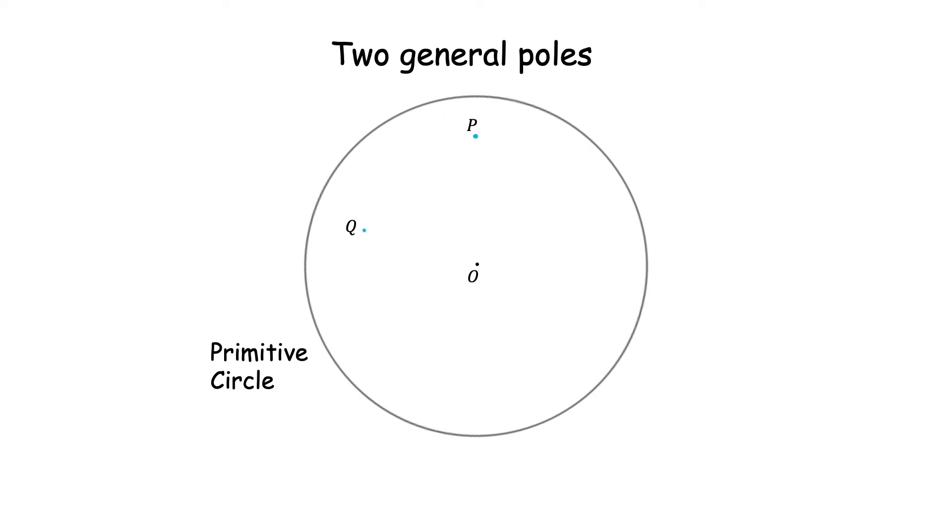If a direction lies in a plane, the opposite direction lies also on the same plane. So if a pole lies on a great circle, the opposite of the pole will also lie on the same great circle. So if we find opposite of either P or Q, we will get the third point which will then determine the great circle we desire.